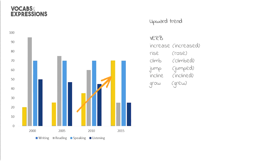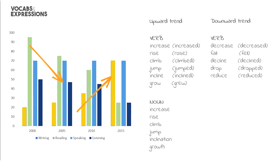For an upward trend, the verbs include: increase, increased; rise, rose; climb, climbed; jump, jumped; incline, inclined; grow, grew. For nouns: increase, rise, climb, jump, inclination, growth.